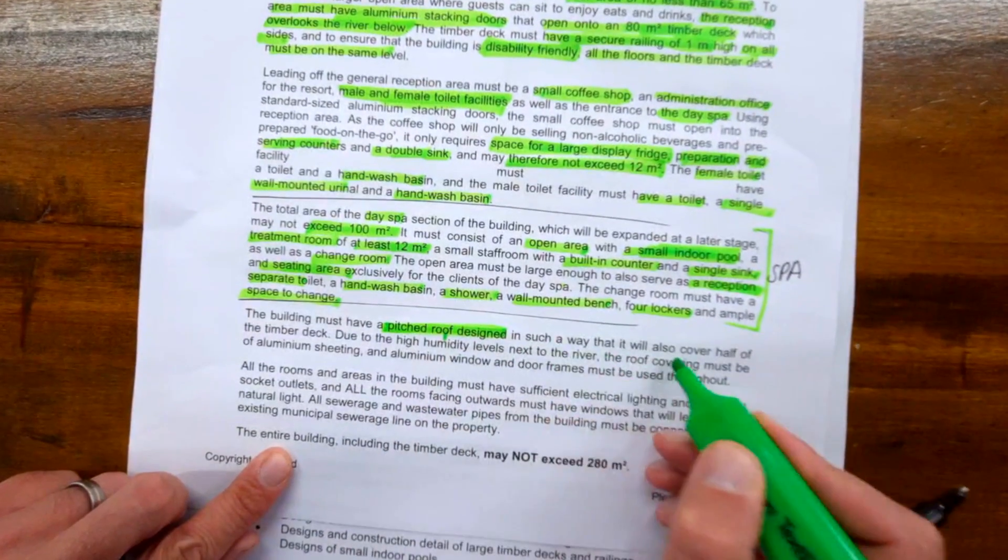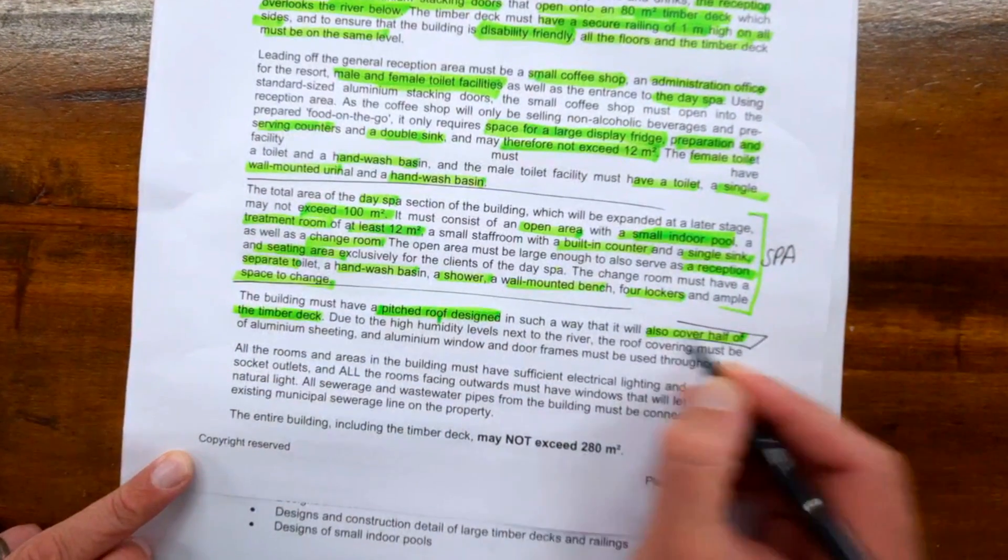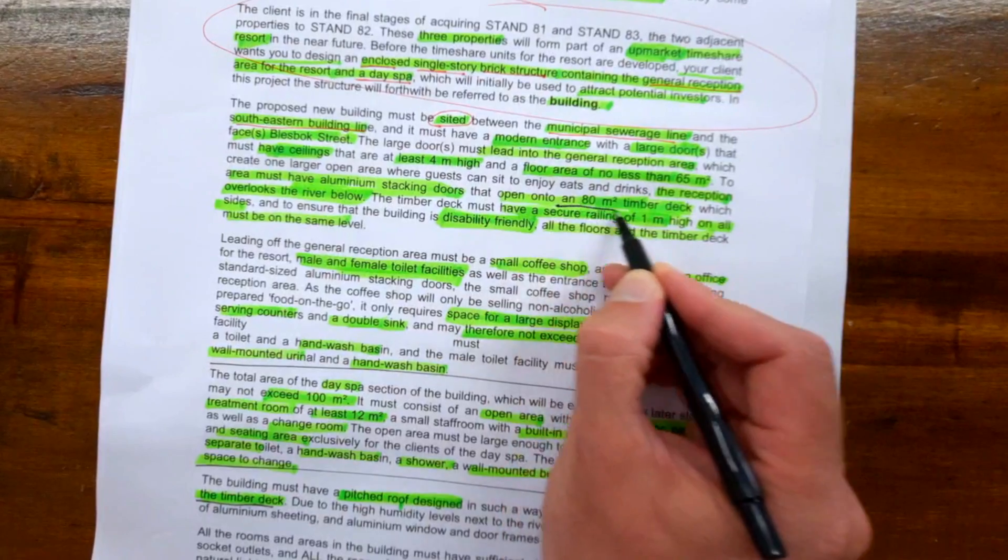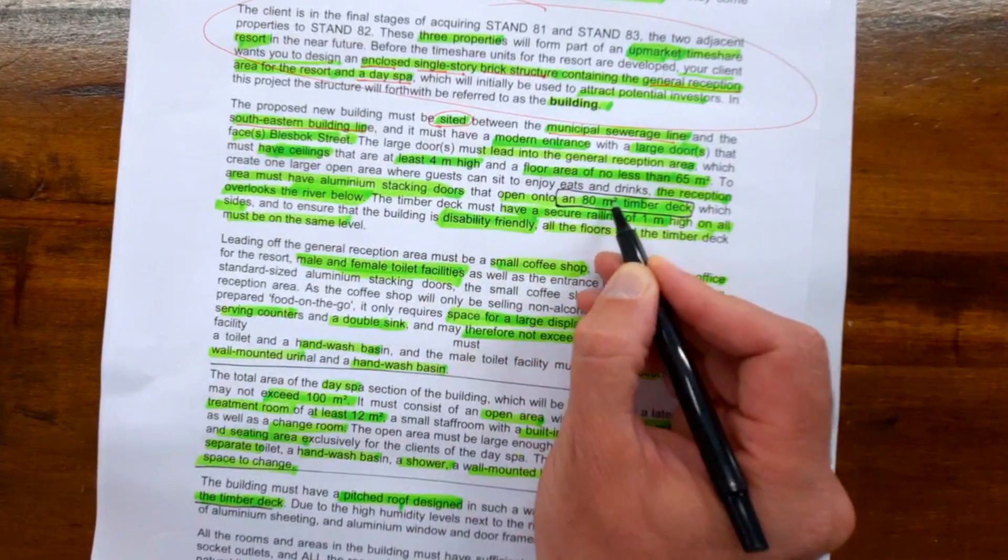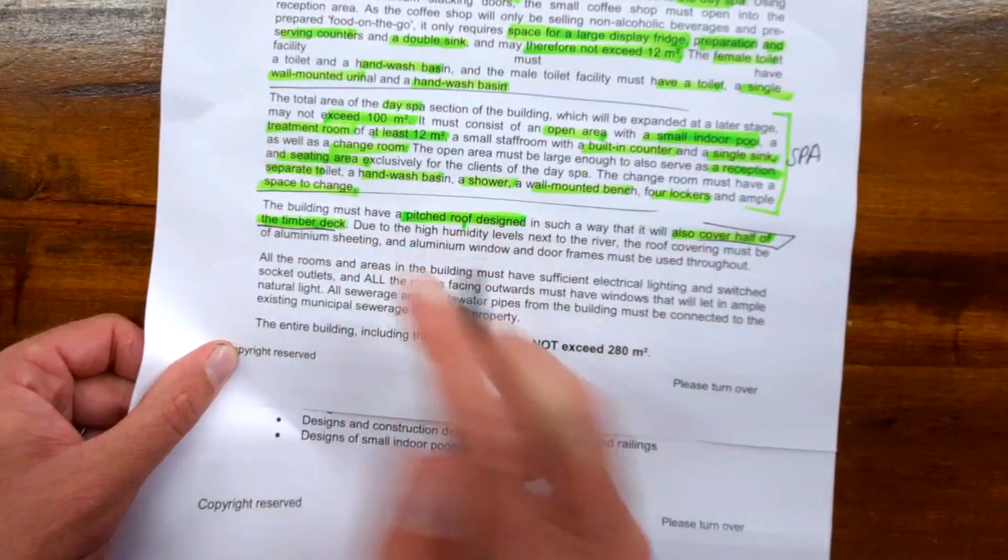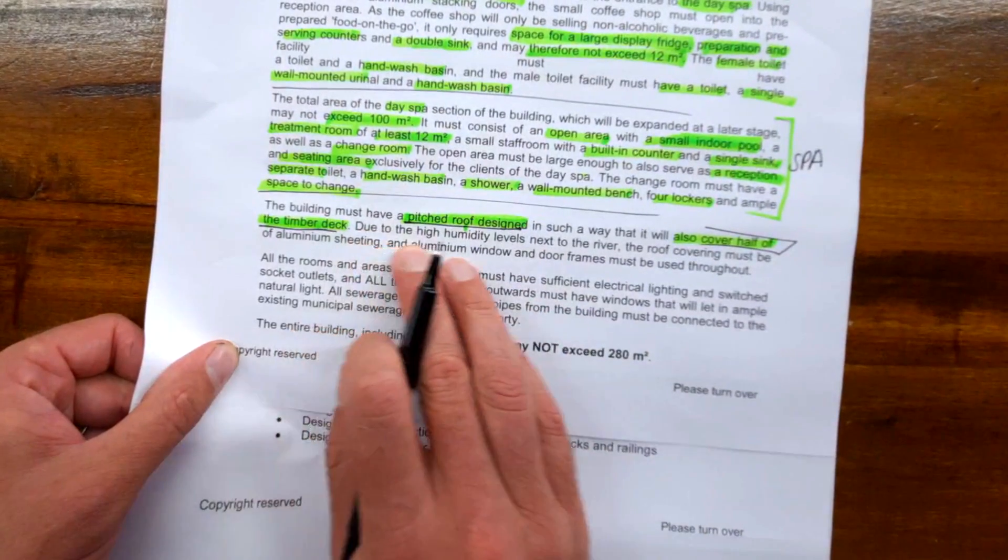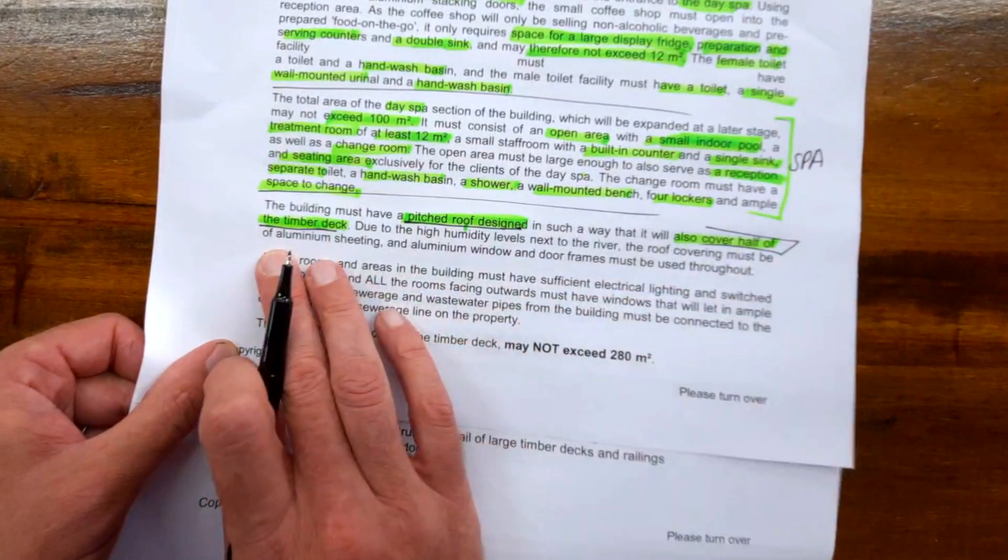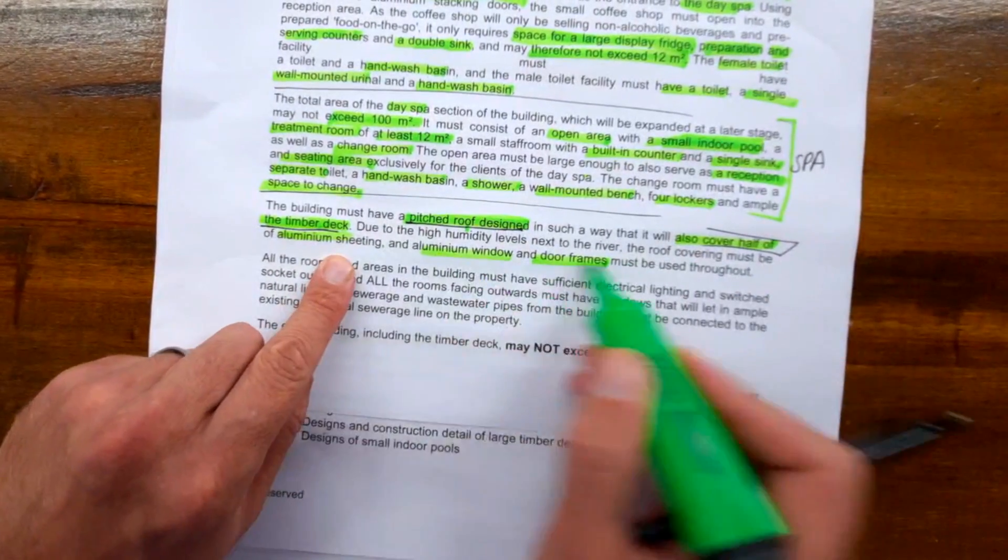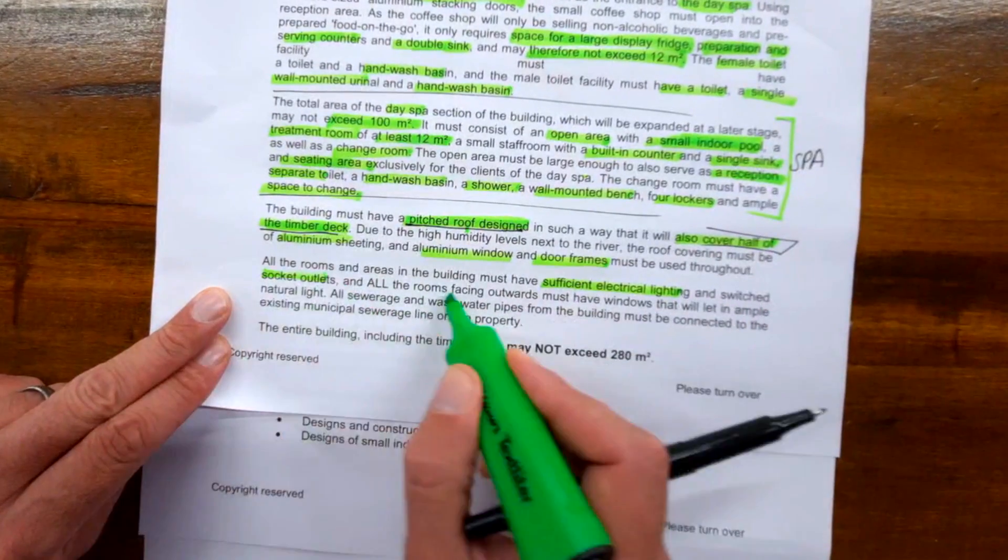The building must have a pitched roof design. Very important—can't have any alternative to a pitched roof. It must also cover half of the timber deck. Earlier it said the timber deck must be 80 square meters, so 40 square meters must be covered by your roof. Due to high humidity levels next to the river, the roof covering must be aluminum sheeting, and aluminum windows and door frames must be used.